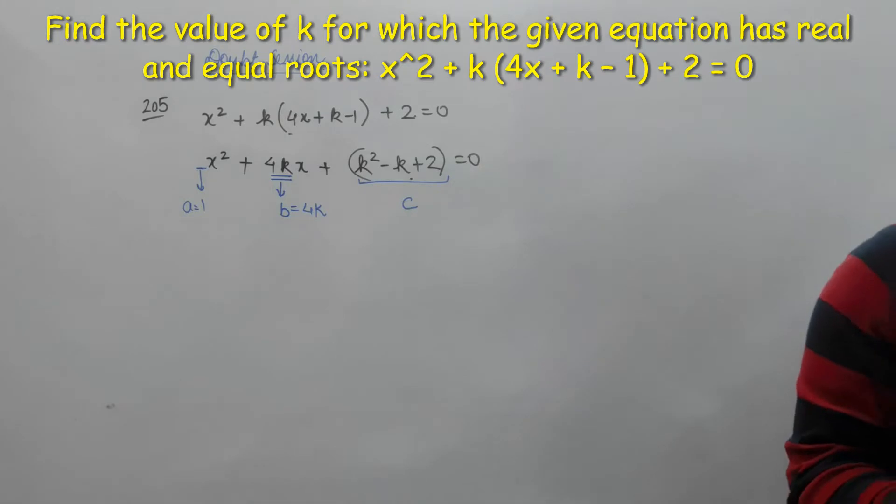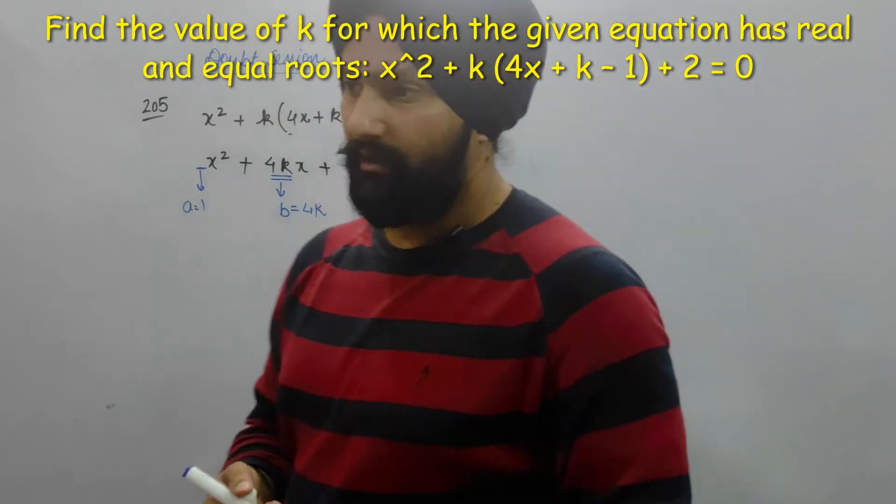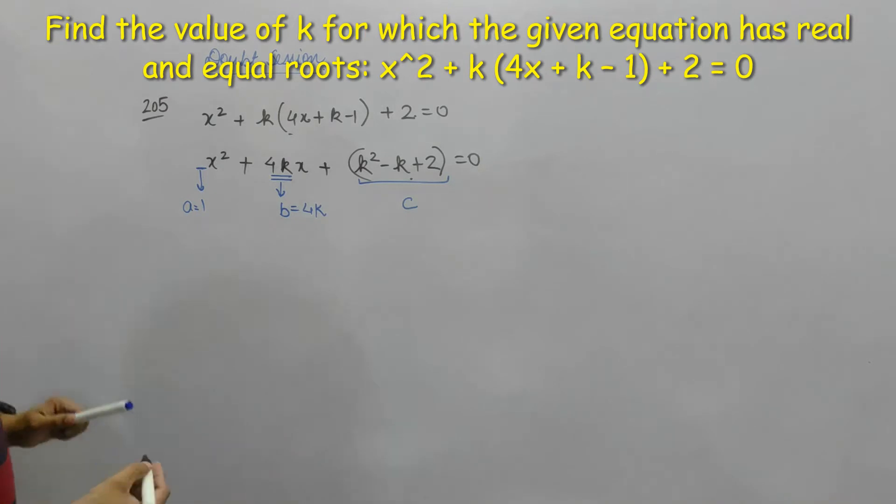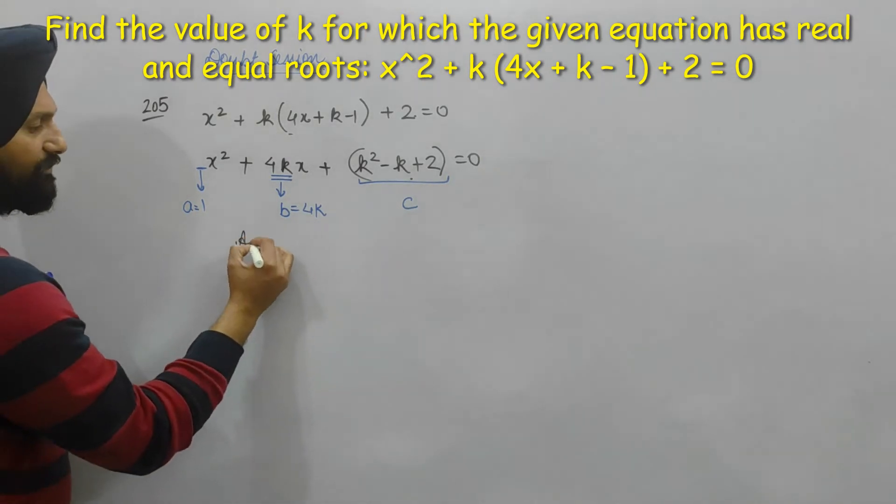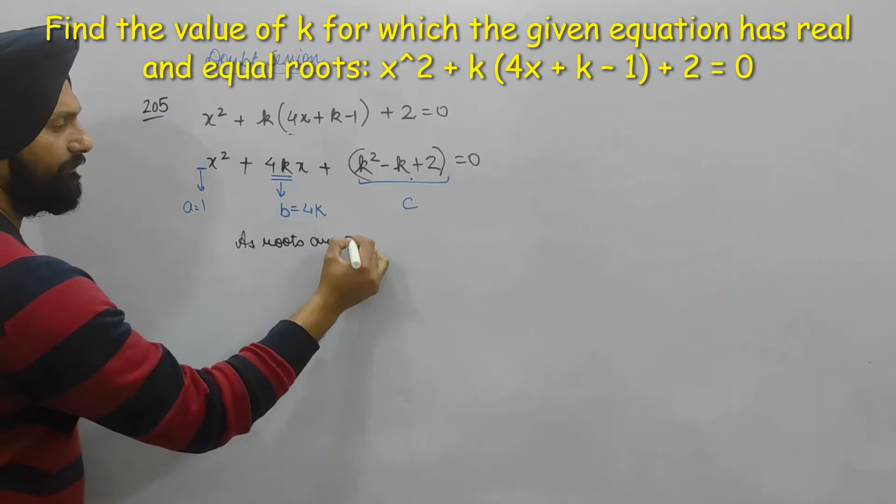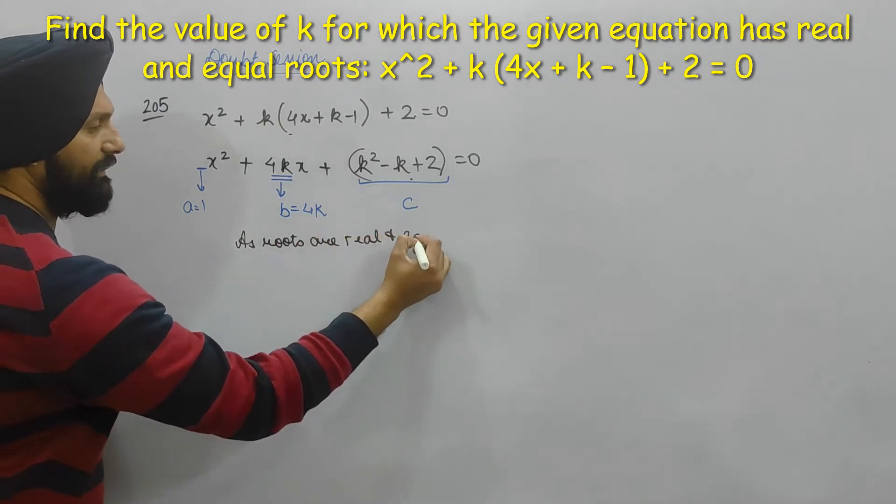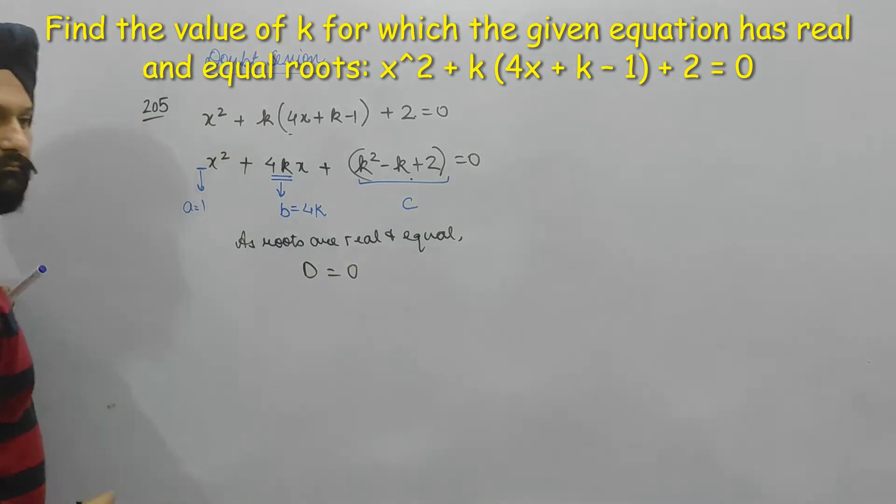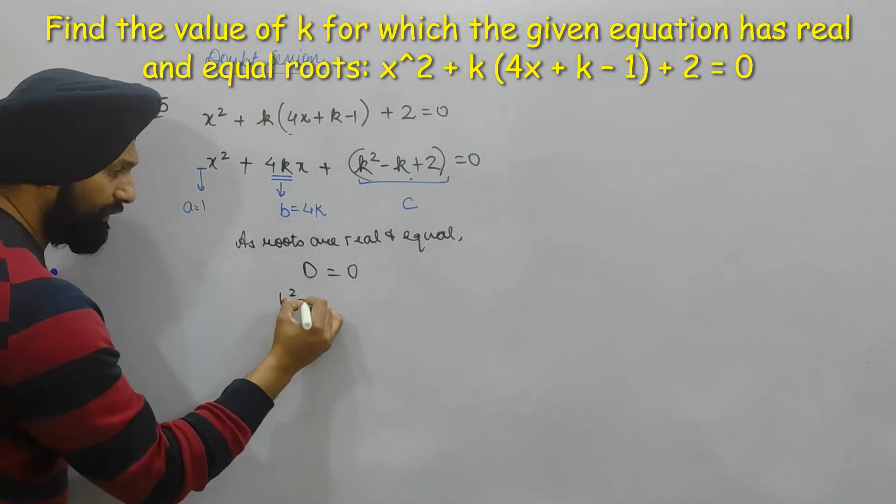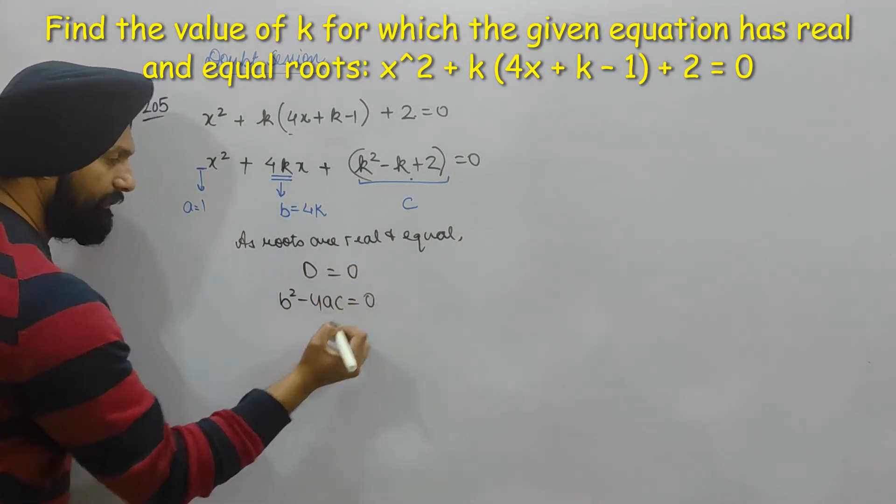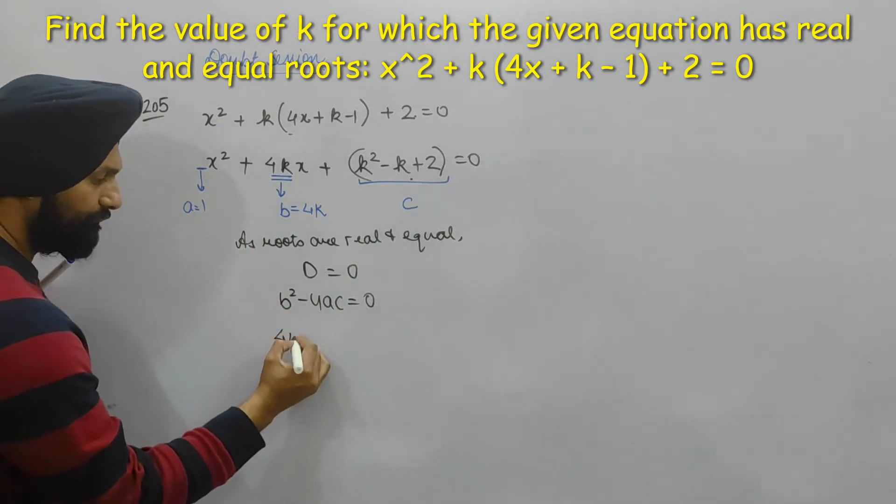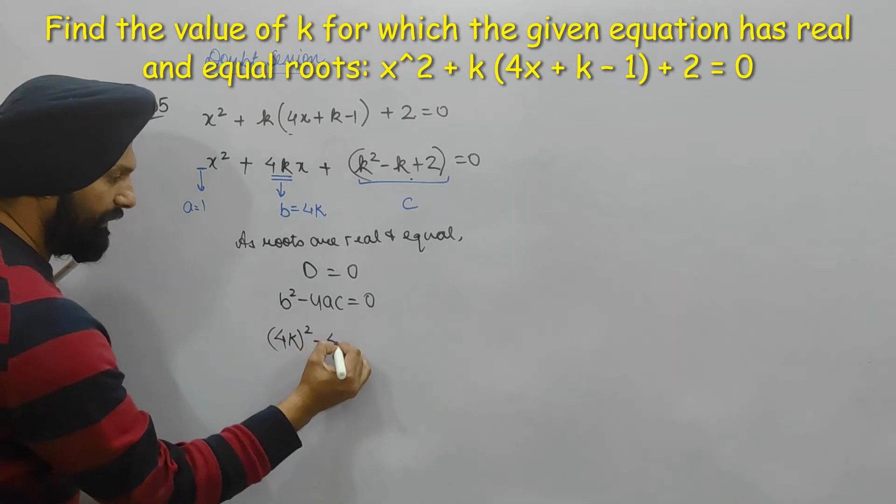Is that clear? I just need to understand the basics: as roots are real and equal, so D must be equal to 0, I mean b square minus 4ac is equal to 0, yes or no? b = 4k whole square minus 4ac...